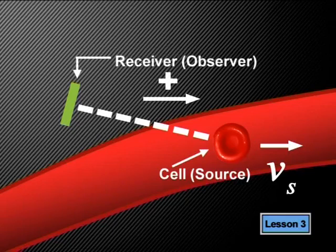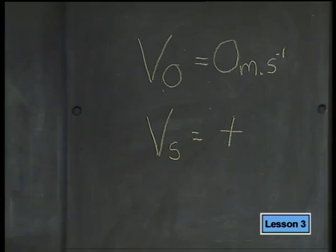We will just focus on the horizontal components. Remember, the positive direction is taken to be the line from the observer to the source, so in our diagram the positive direction is towards the right. Now let's write down our given information. Since the receiver is not moving, we know that the observer velocity is zero meters per second. The blood cell is the source of the wave, and it is moving away from the observer, so its direction is positive.